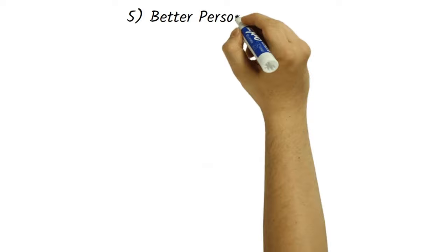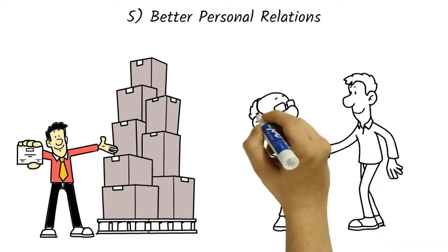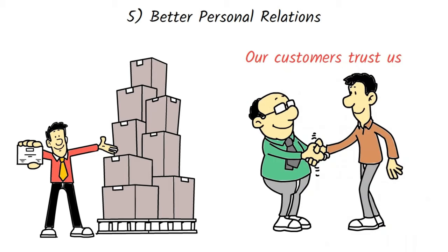Fifth, better personal relations. With the help of total quality management, we eliminate the product or services which will not be liked by our customers or the defective product which creates a good relationship between the brand and customers whether it's about the quality or service of the product. Our customers trust us and that is the most important thing for any brand.